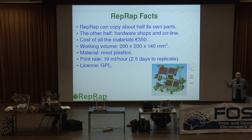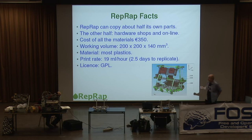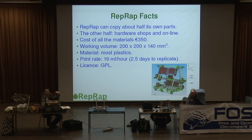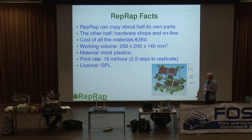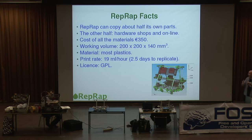It'll build objects in most thermoplastics — plastics that melt and then re-solidify. The two we use most are ABS, which Eric has on that yellow reel over there, and the very best plastic we've found to run in the machine is the one this machine is made from — polylactic acid. I'll say a few more words about that later on. It prints at a rate of about 19 millilitres per hour, which means to copy all the parts it can print for itself takes about two and a half days, though that's getting faster all the time.